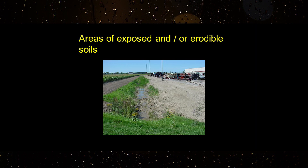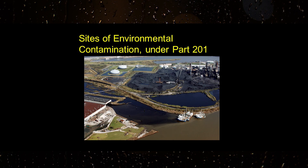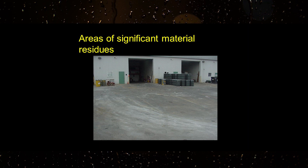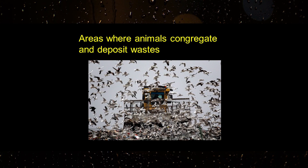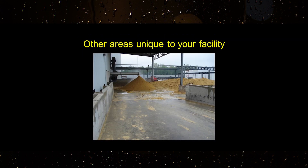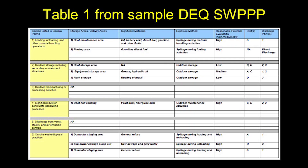Areas of exposed and/or erodible soils. Sites of environmental contamination listed under Part 201 of the Michigan Act. Areas of significant material residues. Areas where wild or domestic animals congregate and deposit wastes. And other areas where stormwater may contact significant materials. Using a table is an efficient way to detail all of the information required.